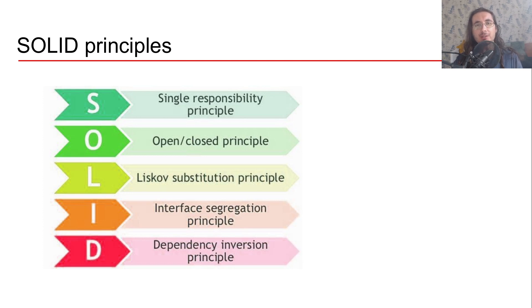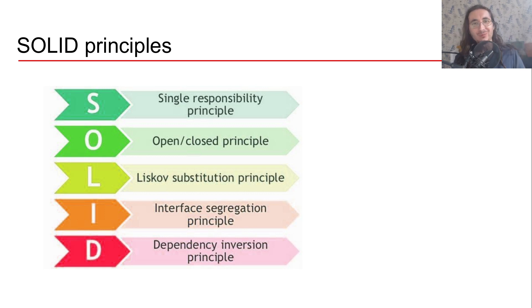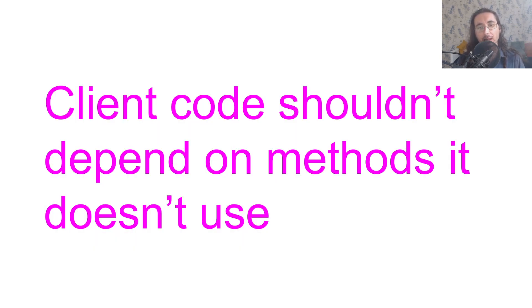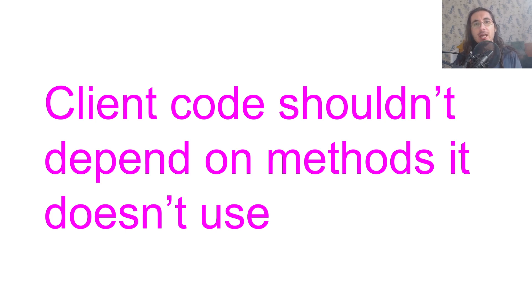Hi everybody and welcome to a new video in the SOLID Principles for Machine Learning Engineers series. This time we're going to look into the fourth principle of the SOLID acronym — the I, which stands for Interface Segregation Principle. This principle says that client code shouldn't depend on methods it doesn't use. If you have a class that inherits from another class, you don't want the child class to inherit methods that it doesn't use.